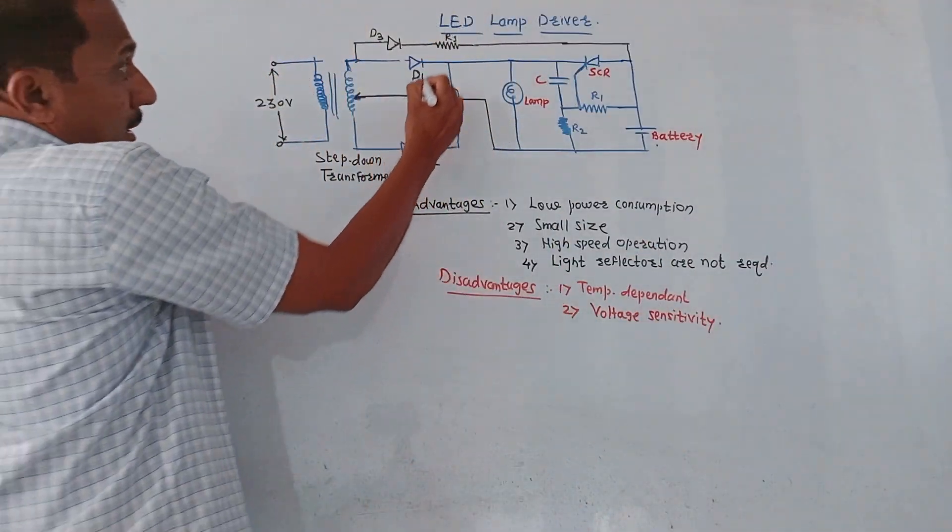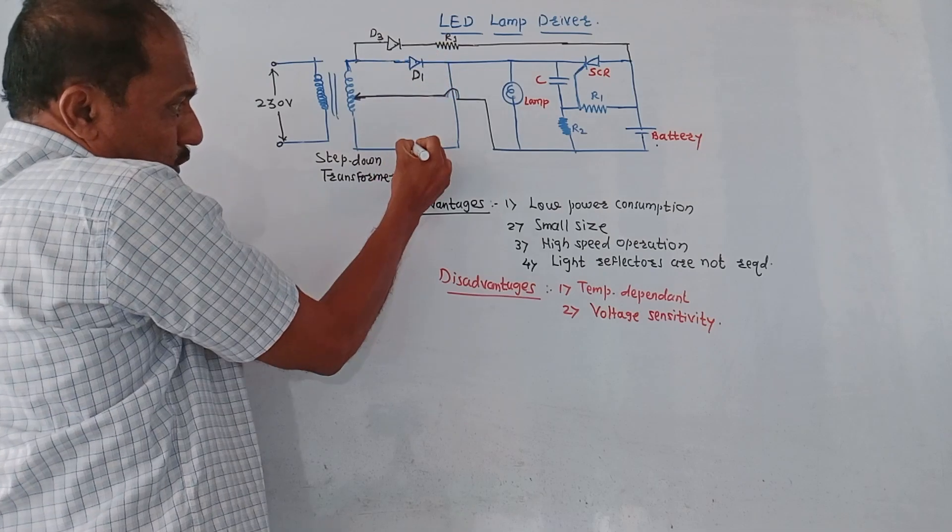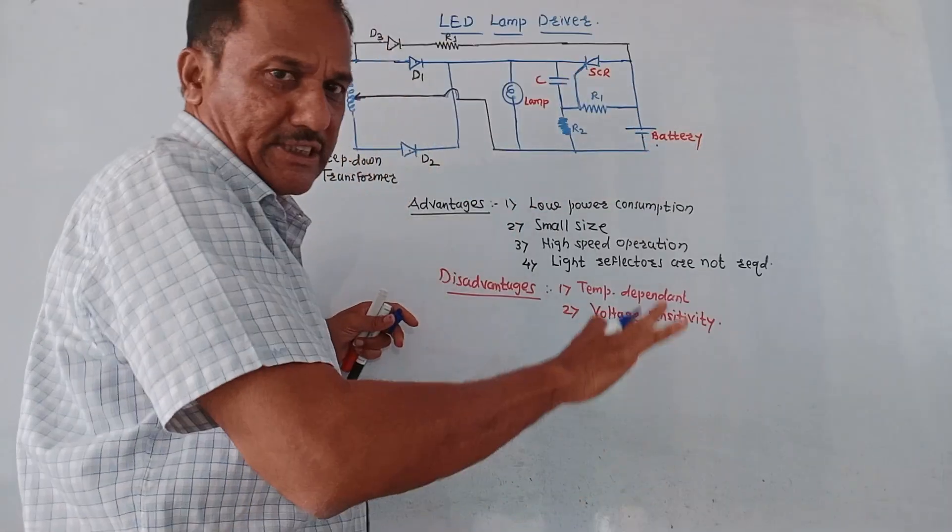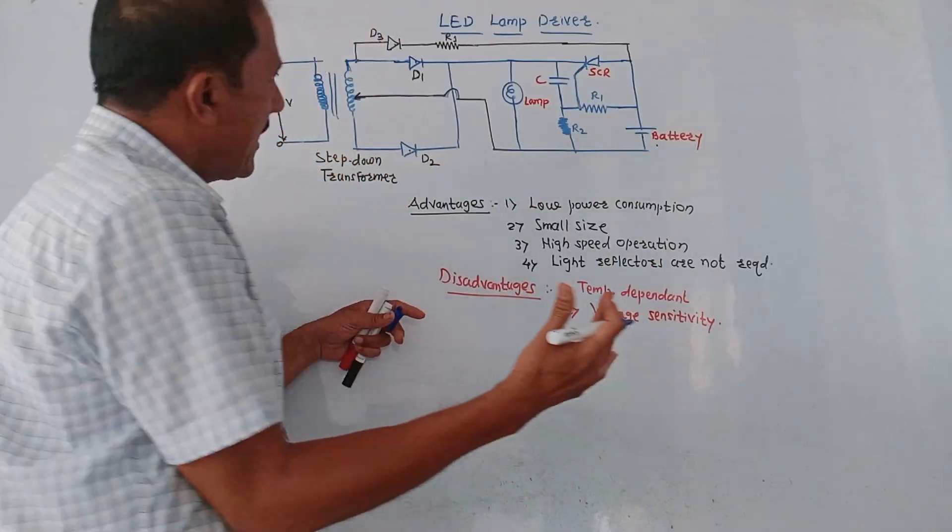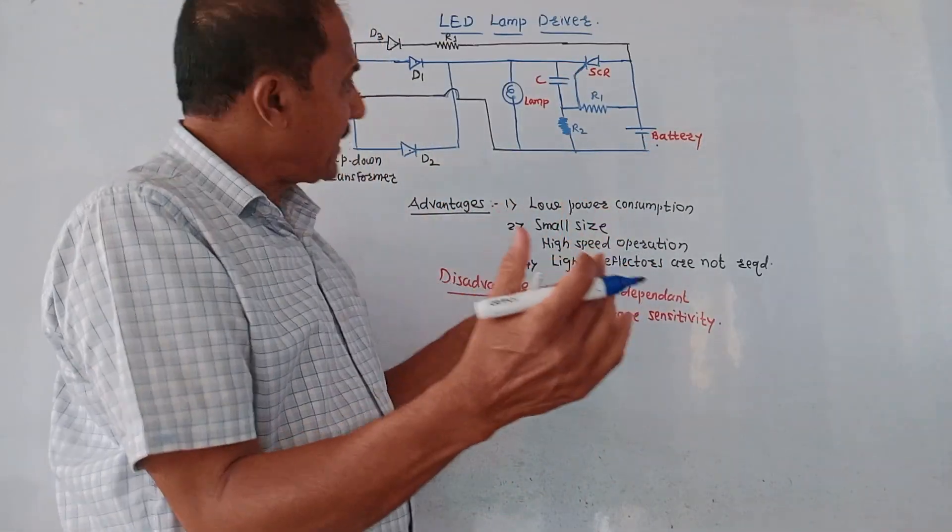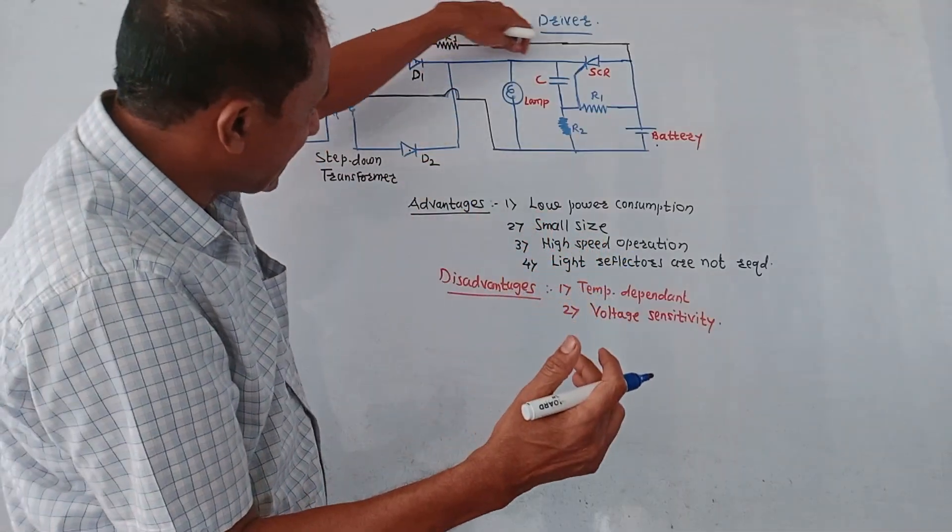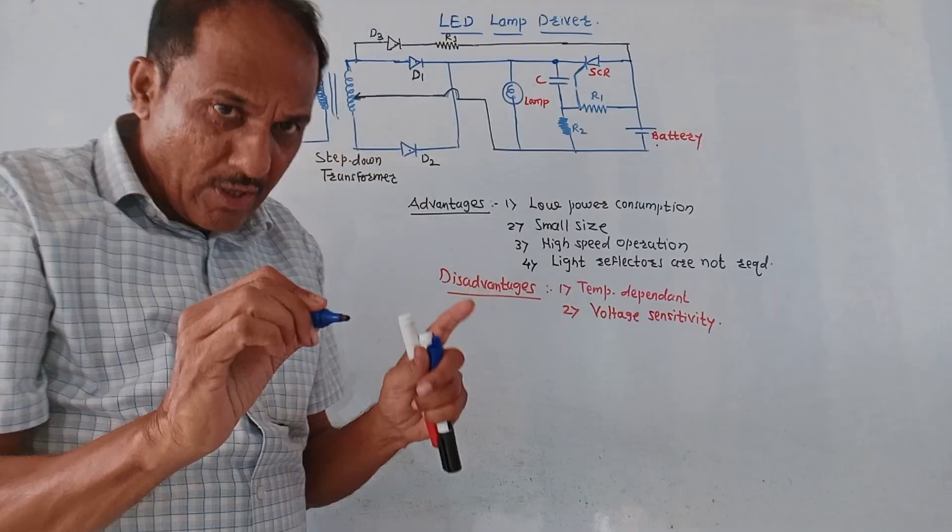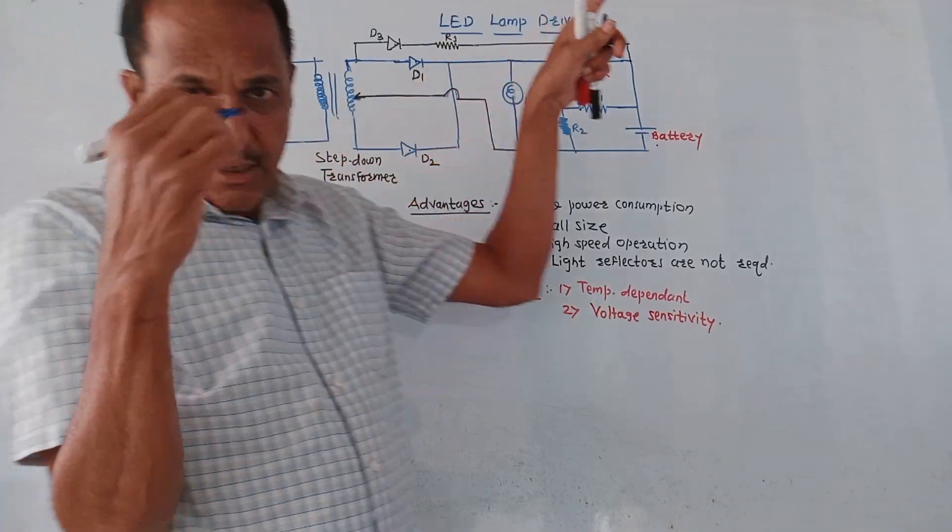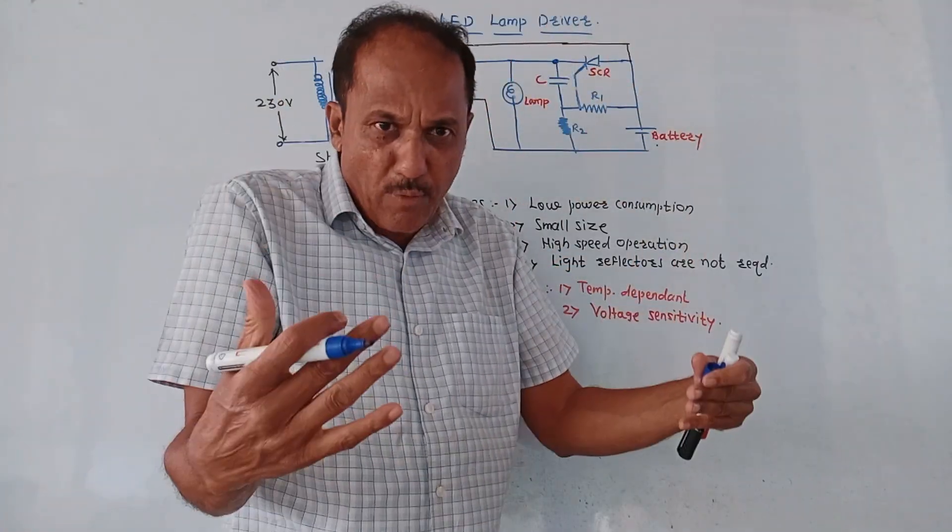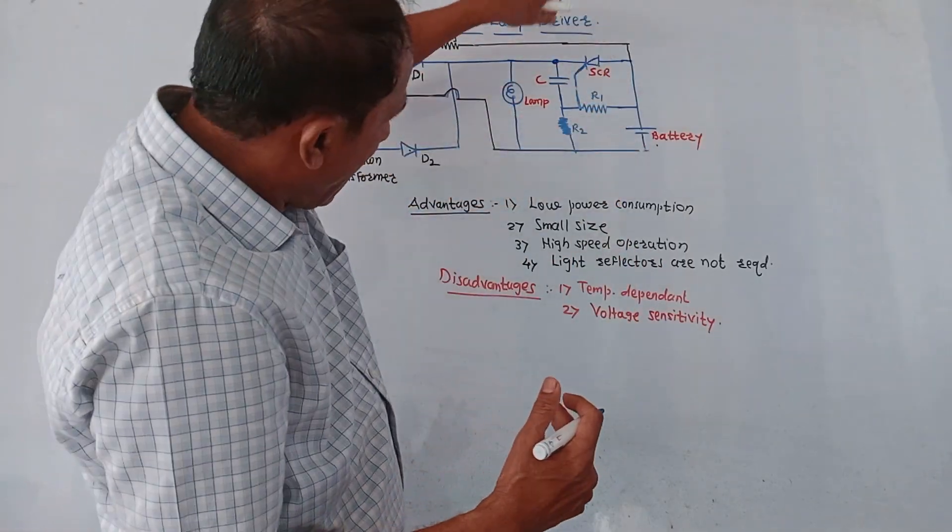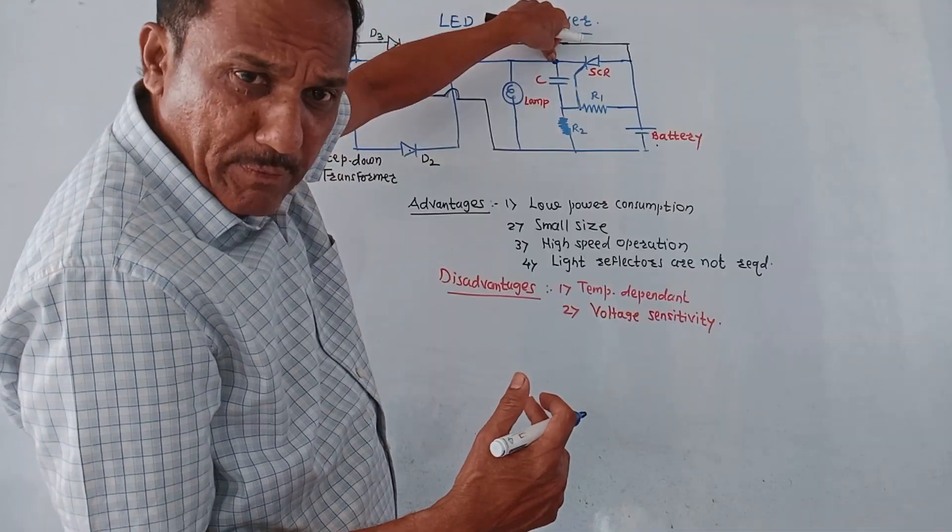Now as I said, D1 and D2 form a rectifier circuit which converts AC signal into DC signal. It produces the output voltage around 6 volt. This is available at this point of the capacitor, so due to this 6 volt, the charging of capacitor starts taking place. Now observe this diagram carefully. At this point, at the upper plate of capacitor, around 6 volt voltage is available which is connected to this terminal of SCR.